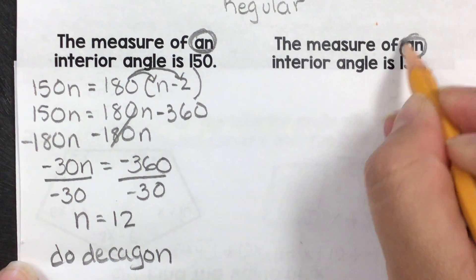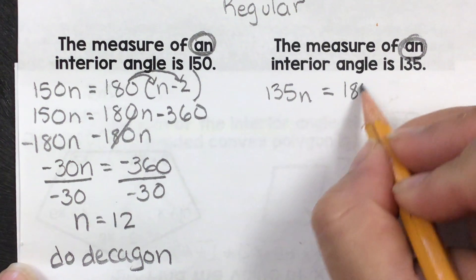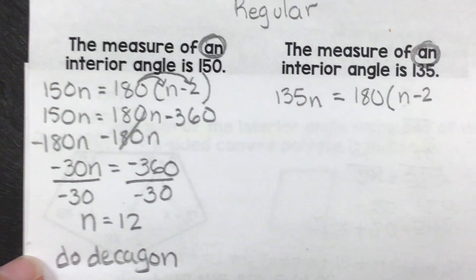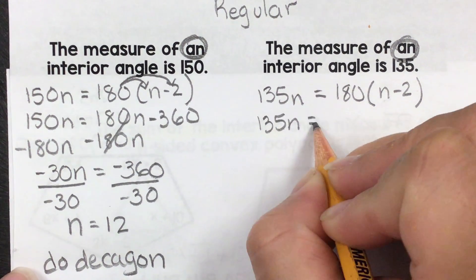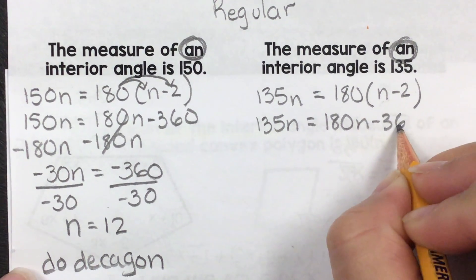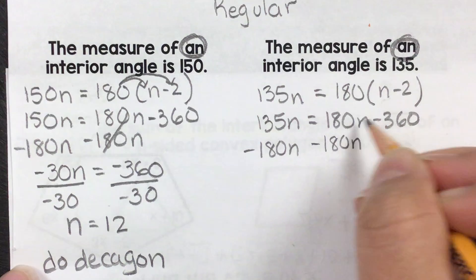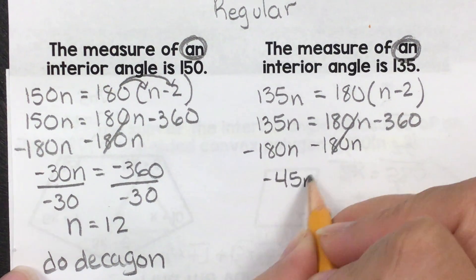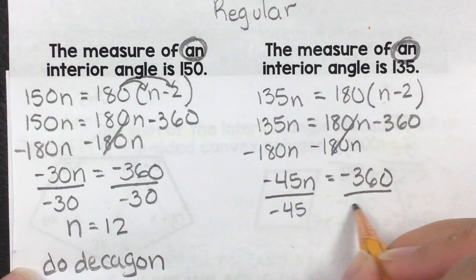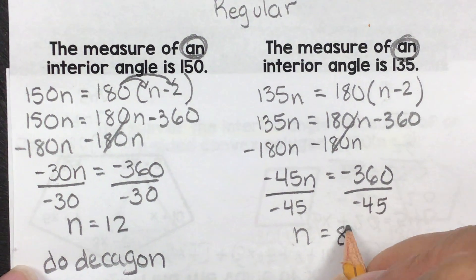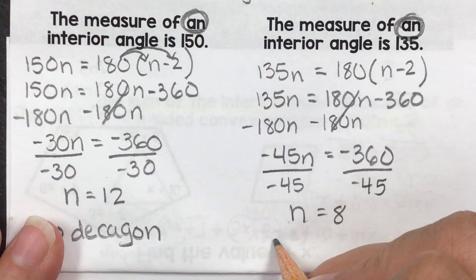So every time you see n, so one angle we do 135n is equal to 180(n - 2). We're going to do the distributive property, so it's still 135n is equal to 180n minus 360. We're going to subtract 180n from both sides. Negative 45n is equal to negative 360. So if it says to write the number of sides, that's good enough. It says to name the polygon, it is an octagon.